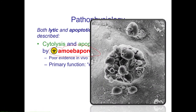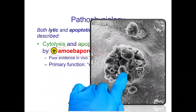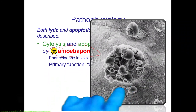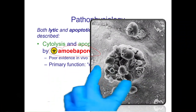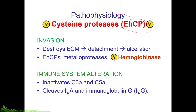This picture shows a more advanced stage of invasion wherein numerous trophozoites can be seen penetrating the colonic ulcer. Entamoeba histolytica cysteine proteases, or EHCPs, are very important in the pathophysiology of the disease. They play a role in invasion and immune system alteration occurring during amoebiasis. During invasion, the extracellular matrix is destroyed, the colonic epithelium detaches, and ulcers are generated.